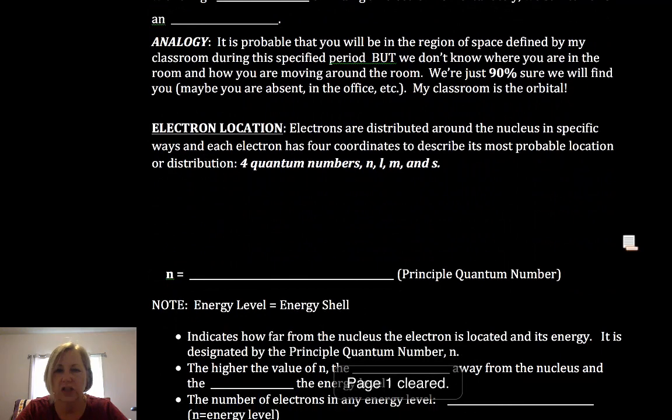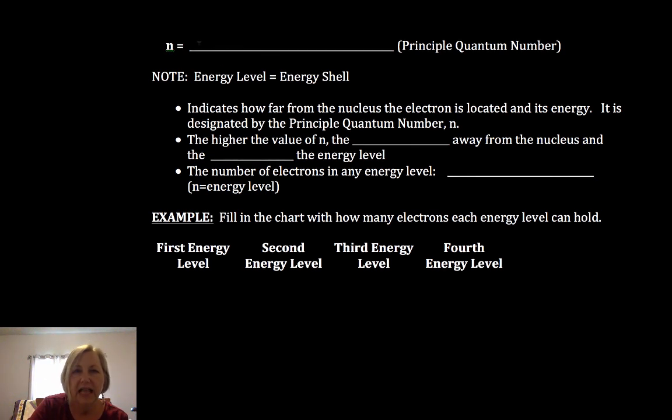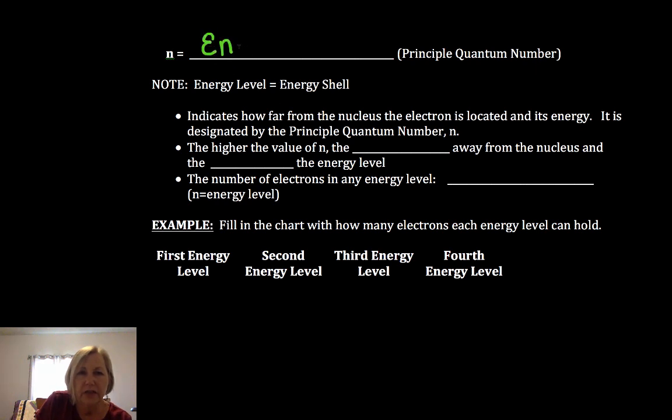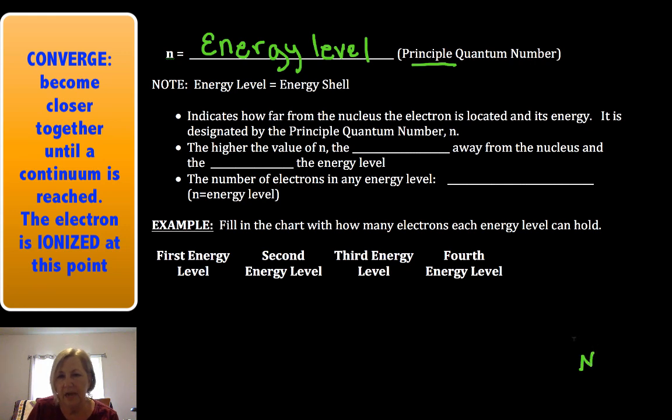Let's start with looking at N. N is called an energy level or energy cloud. I usually do energy level. Could be called an energy shell. It's called the principal quantum number. When I looked at Bohr's model in my videos, and you have the nucleus down here and you have these energy levels that get closer and closer together, we're talking about N, the quantum number. N indicates distance from the nucleus and its energy.